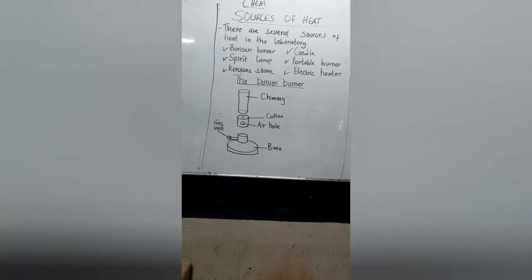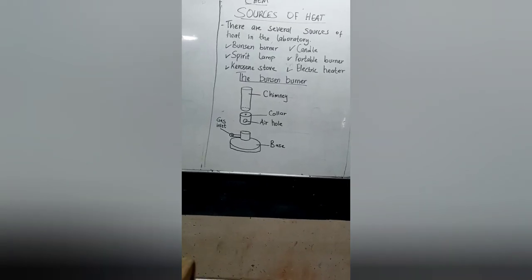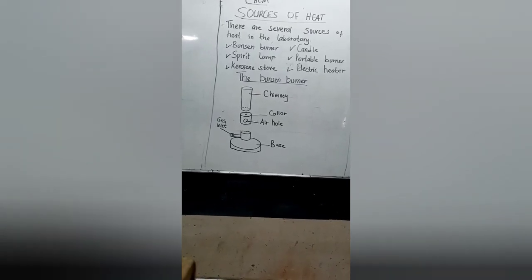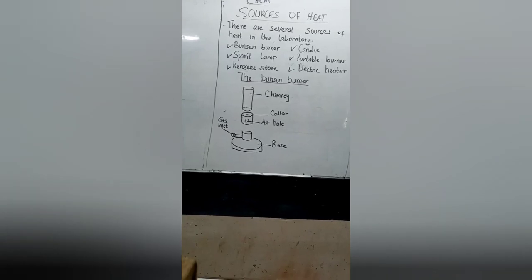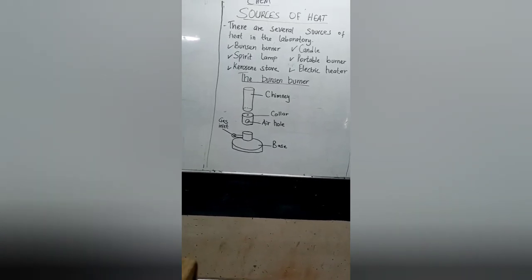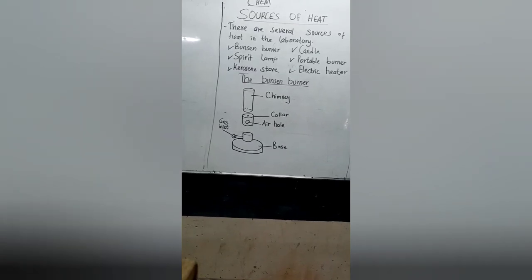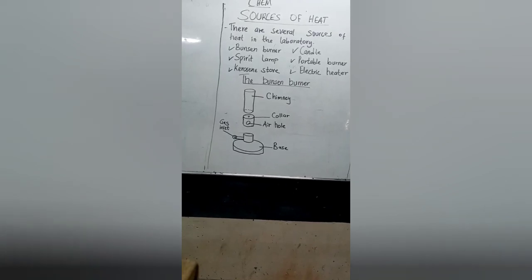In chemistry we have some practical activities that require heat. We use some apparatus to provide that heat. Some of the apparatus include Bunsen burner, spirit lamp, kerosene stove, candle, portable burner, and an electric heater.